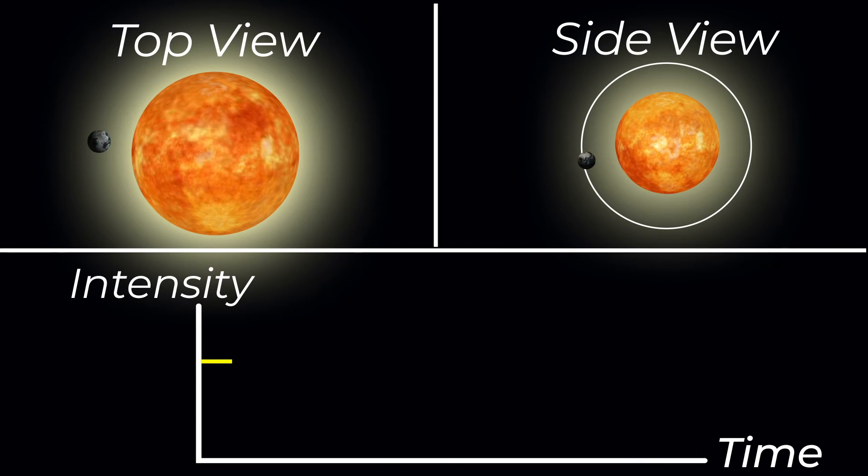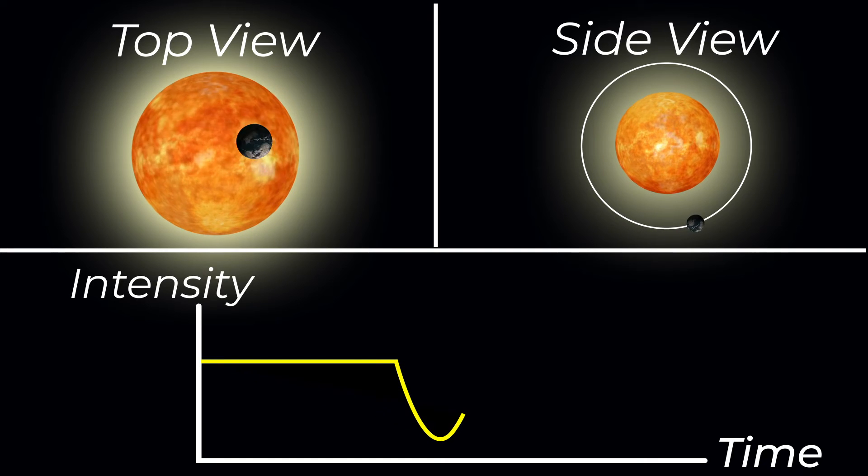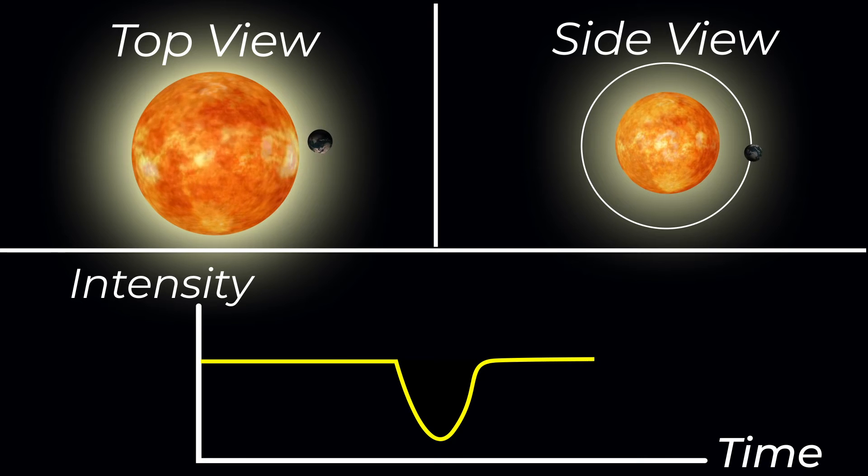Now, if there's an object orbiting the star, like this exoplanet shown here, and it moves in front of the star, it would block some of the light emitted and there would be a slight dip in intensity recorded on the graph.